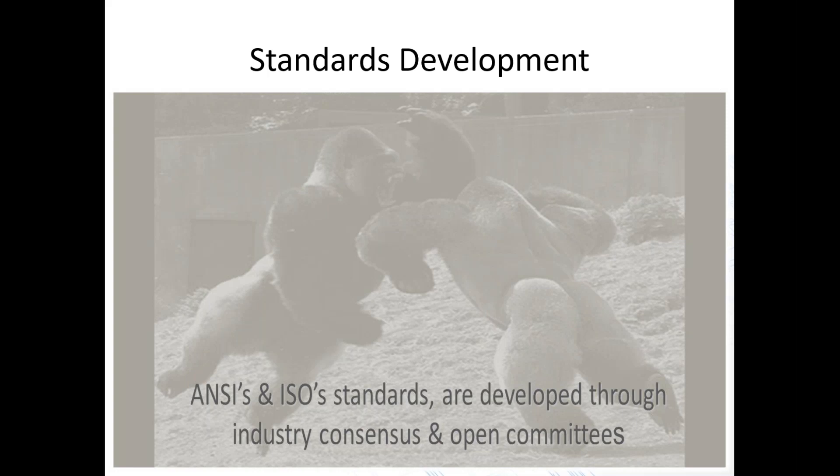We passed the ANSI standard for gauge porcelain tile material and installation for interiors with thinset mortar in about 18 to 24 months — probably one of the best standards I've ever seen go through. One we've been working on for close to 10 years now is uncoupling membranes, still not completed. It really depends on the complexity, and in the case of gauge porcelain tile, everyone on the committee recognized the importance of getting it done, so we worked hard as a group to make sure it went through as quickly as possible.